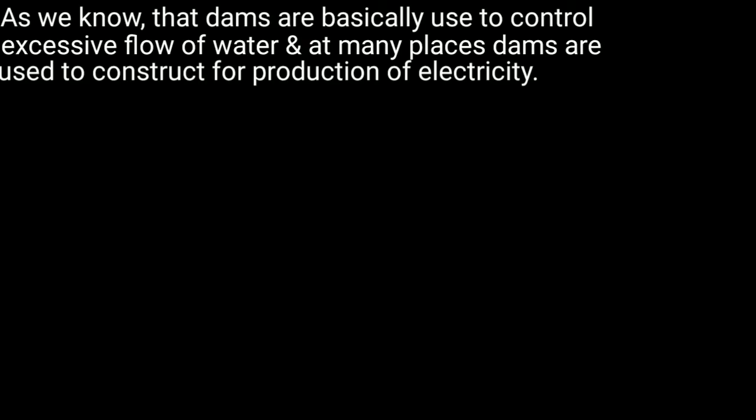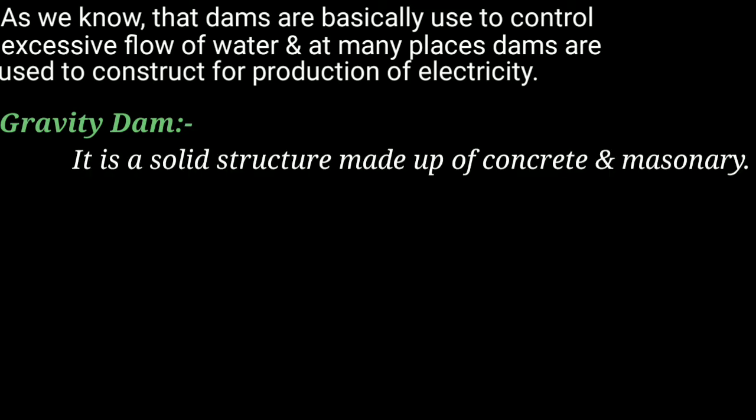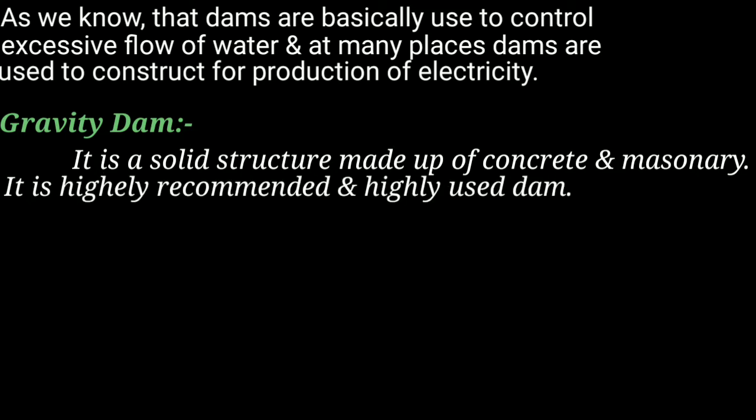A dam stops excessive water flow, and at many places we also produce electricity. So what is a gravity dam? It is a solid structure which is made from concrete or masonry. It is a highly recommended and highly used type of dam.